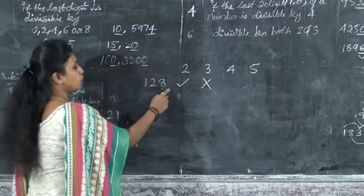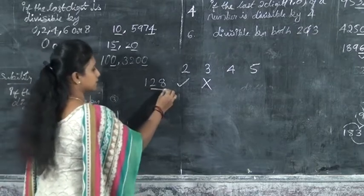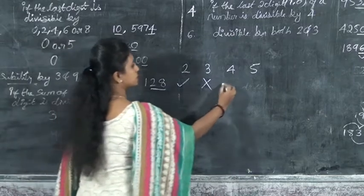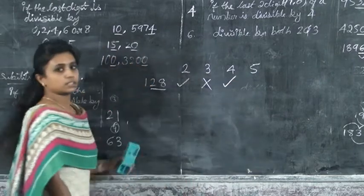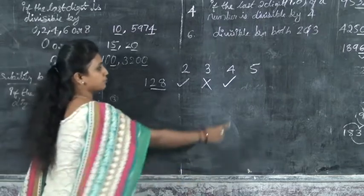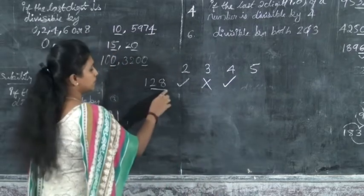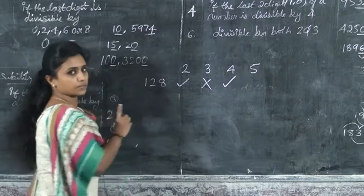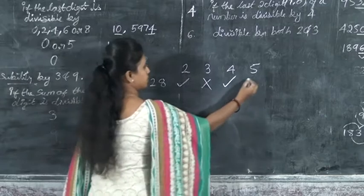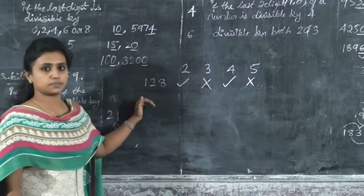What about 4? For 4, check the last two digits: 28. Since 28 is divisible by 4, 128 is divisible by 4. For 5: check the last digit — it is 8, which is not 0 or 5, so this number is not divisible by 5. This is the way of finding divisibility using the rules.